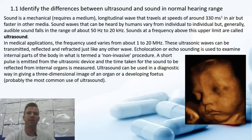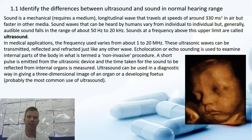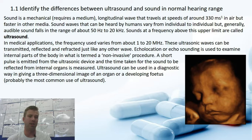1.1. Identify the differences between ultrasound and sound in a normal hearing range. You would have learnt about sound and sound waves in the world communicates, and we're looking at a similar concept in our option topic for Year 12. Sound is a mechanical wave, or longitudinal wave, that travels at a speed of around 330 to 340 meters per second, faster in other media.